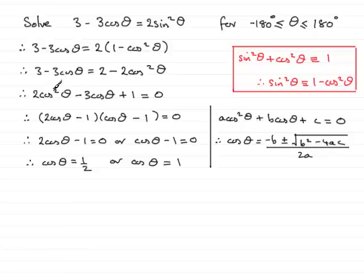And in this example, the a would be the 2, the b would be minus 3, and the c would be 1. And if you pop those values into the formula, you should find that you get cos theta equals 1/2 and cos theta equals 1 when you take the plus or minus options. So, you've got two ways, then, of getting down to this stage here.